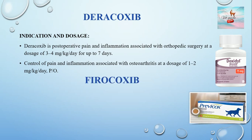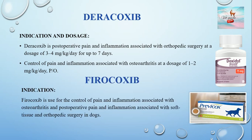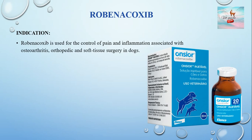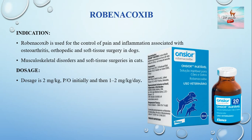Firocoxib is used when animals indicate pain and inflammation associated with osteoarthritis, postoperative pain, and inflammation associated with soft tissue and orthopedic surgery in dogs. Its dose rate is 5 mg/kg orally. Mavacoxib is used when animals indicate pain and inflammation associated with osteoarthritis, orthopedic soft tissue surgery in dogs, and musculoskeletal disorders and soft tissue surgery in cats, at a dose rate of 2 mg/kg per day.